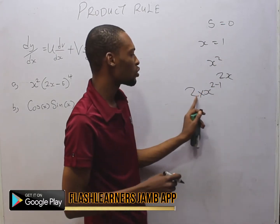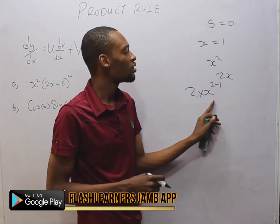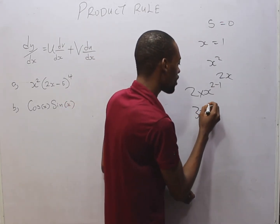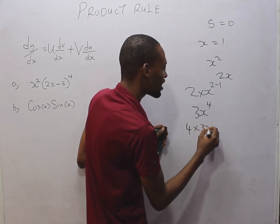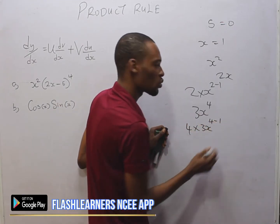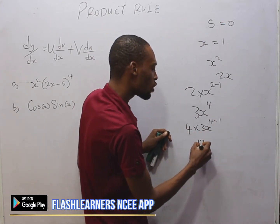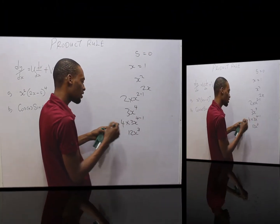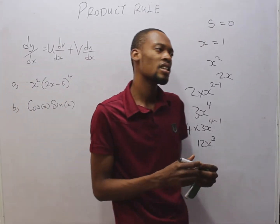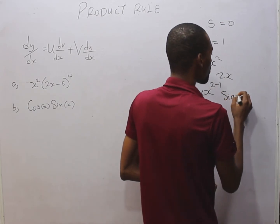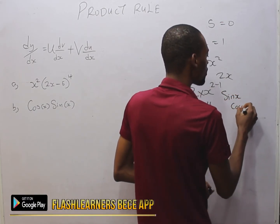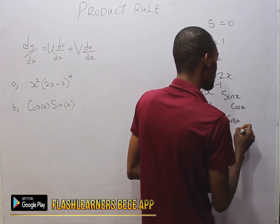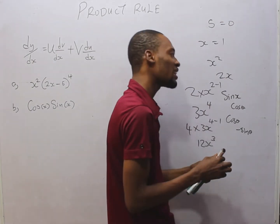We use the power to multiply, and subtract 1 from the power. So for 3x raised to power 4, differentiating gives 4 times 3x raised to the power of 4 minus 1, which is 4 times 3x raised to the power of 3. I also said that when you differentiate sin(θ) you get cos(θ), and when you differentiate cos(θ) you get minus sin(θ). I'll share a link to those videos.